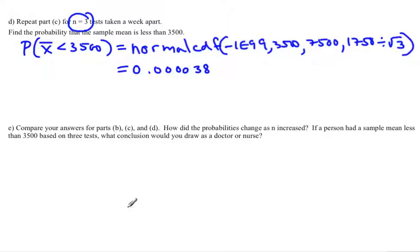Let's look at the last part. It asks us to compare your answers in parts b, c, and d, and how did the probabilities change as n increased. If you look back, you'll notice that our probabilities got much smaller as n was getting bigger. So as n increased, the probability that x-bar or x is less than 3500 decreased.